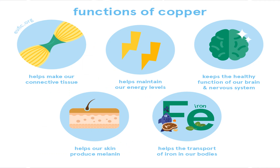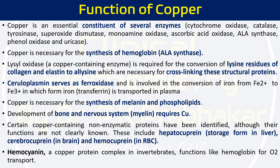Copper performs many different functions in the body. It helps in making connective tissue and maintaining our energy level, because many biochemical reactions for energy production require enzymes that depend on copper. It keeps our brain and nervous system functioning healthily. It helps the skin produce melanin and assists iron transportation in the body. Copper is an essential constituent of several enzymes including cytochrome oxidase, catalase, tyrosinase, superoxide dismutase, monoamine oxidase, ascorbic acid oxidase, and ALA synthase, all responsible for various biochemical reactions.